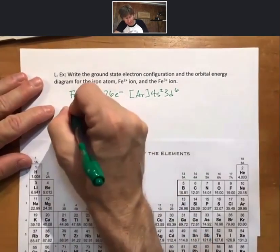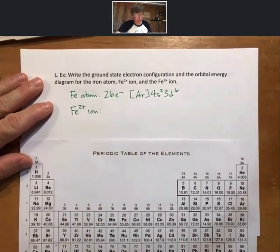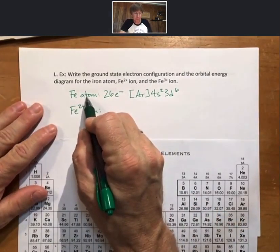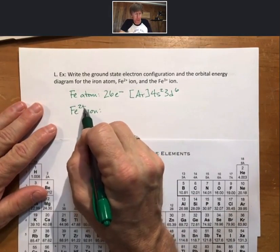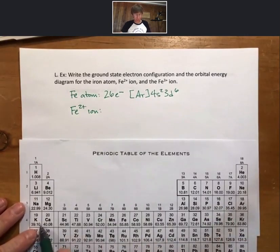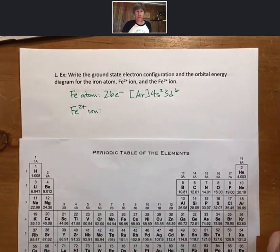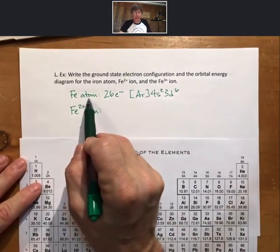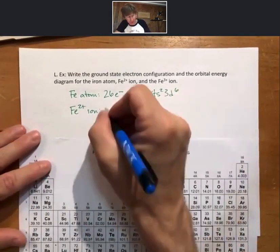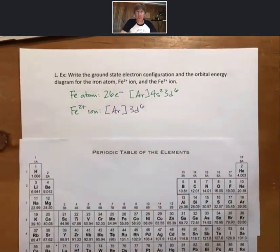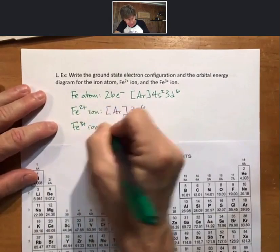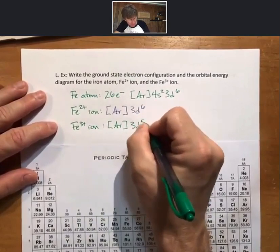For the iron 2+ ion, we have 24 electrons. I always like to do the atom first and then take electrons away. Do the iron atom first, look for the highest energy electrons — highest value of n — and take those away first. Removing the two 4s electrons gives [Ar] 3d6. To get iron 3+, take one more electron away, and we're left with [Ar] 3d5.